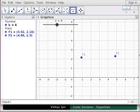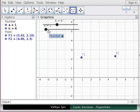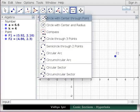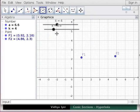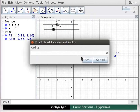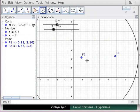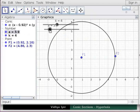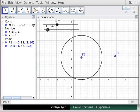We will create another number slider named A. Its min value is 0, max value is 25, increment is 0.1. Click on Circle with Center and Radius Tool and click on F1. A text box appears. Type A and click OK. Drag A to a value between 2 and 3. A circle C with Center F1 and Radius A appears.